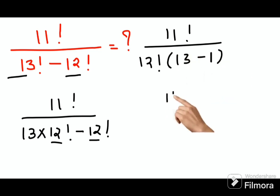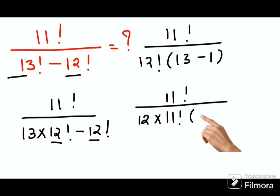Now I can write 12 factorial also in terms of 11 factorial. So this becomes 12 into 11 factorial into 12.